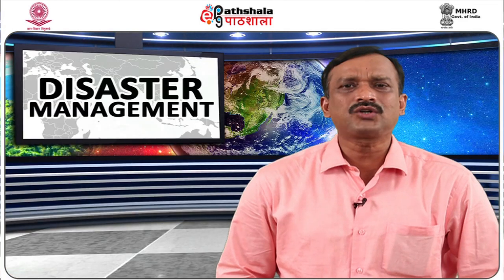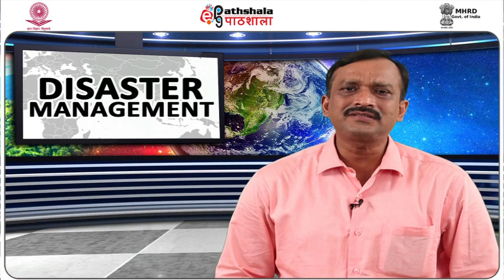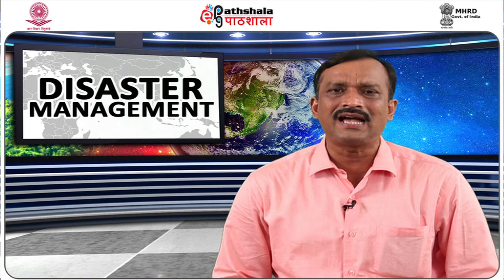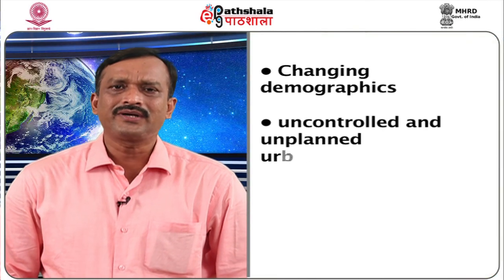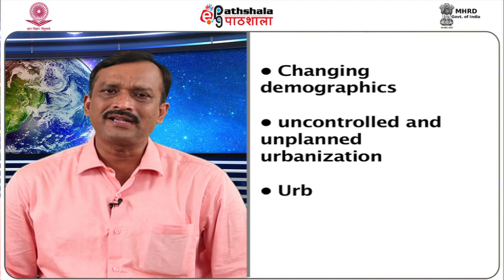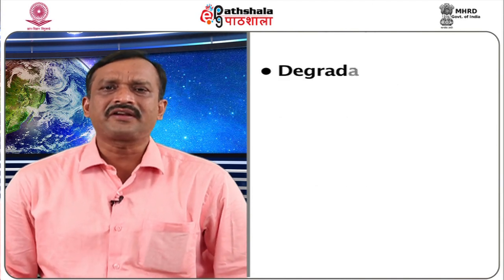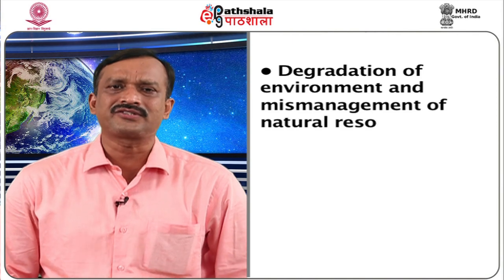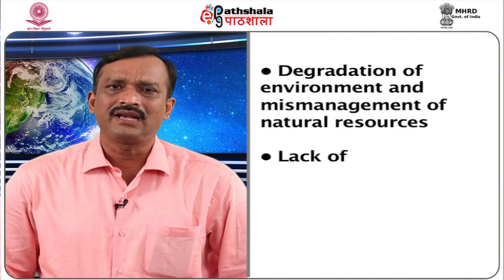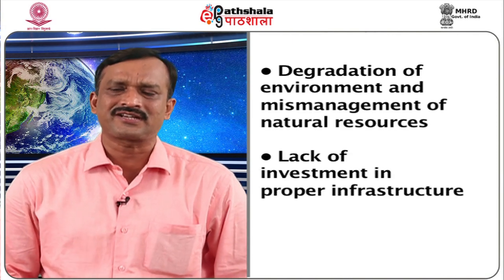Anthropogenic disasters include the Bhopal gas tragedy in 1984, the AMRI fire accident incident in 2011, the Thane building collapse in 2013, and the stampede at Datiya Madhya Pradesh in 2013. Conflicts such as ethnic conflict in Assam 2011 and Gujarat riots 2002, and biological diseases like avian flu and pest attacks are also examples. The risk is compounded by vulnerability factors including changing demographics, uncontrolled and unplanned urbanization, urban-rural poverty, degradation of environment and mismanagement of natural resources, and lack of investment in proper infrastructure.